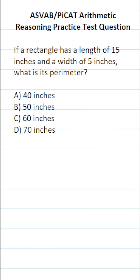This arithmetic reasoning practice test question for the ASVAB and PyCat says: if a rectangle has a length of 15 inches and a width of 5 inches, what is its perimeter? In order to do well on the ASVAB and PyCat, you have to memorize a lot of basic formulas from geometry, including how to find the perimeter of a rectangle.